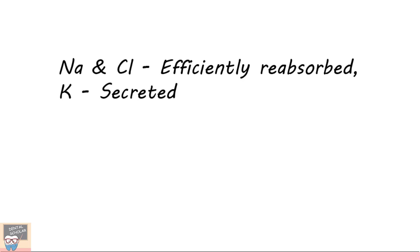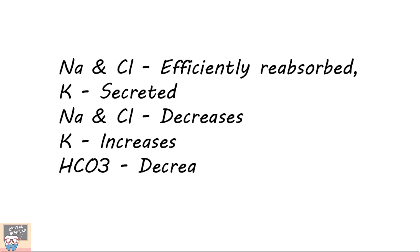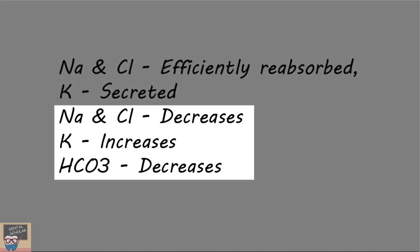In case of slow salivary secretion, sodium and chloride are efficiently reabsorbed, while potassium is secreted in the striated ducts, resulting in a low sodium and chloride concentration, and an increase in potassium concentration. Bicarbonate secretion in such condition reduces, and hence its concentration in saliva also reduces. So in slow salivary flow, sodium, chloride and bicarbonate concentration reduces, while potassium concentration increases.